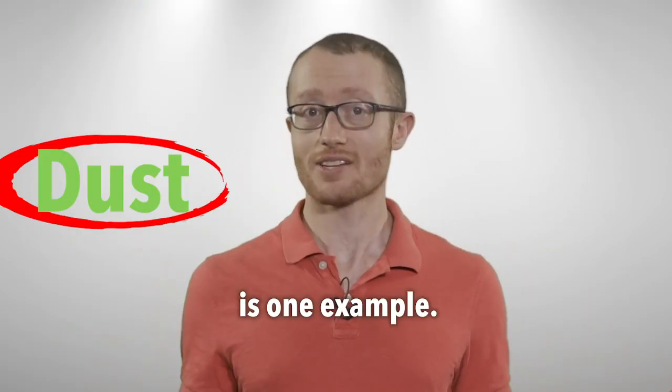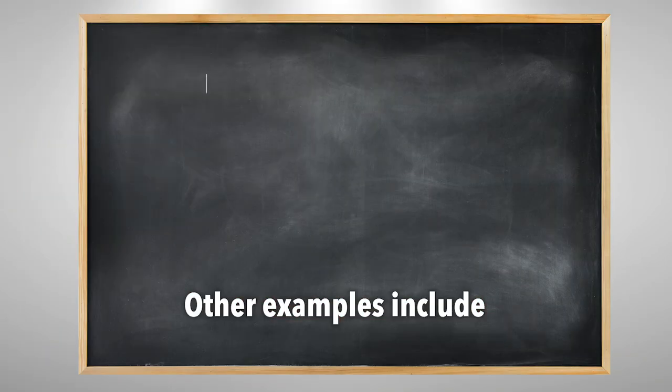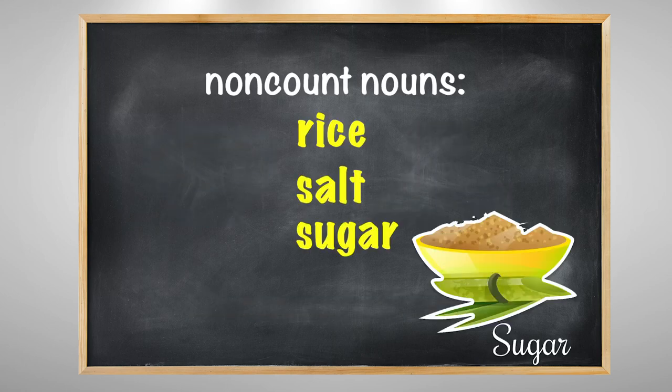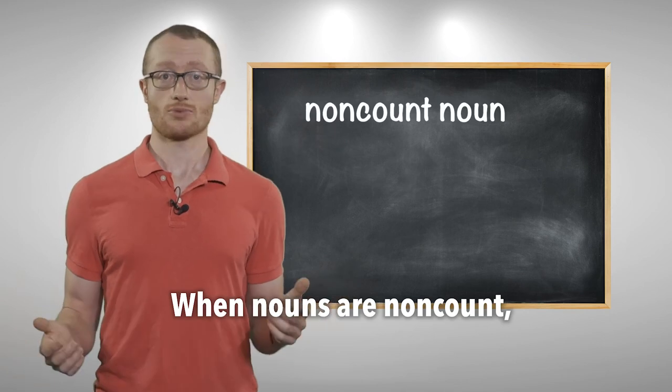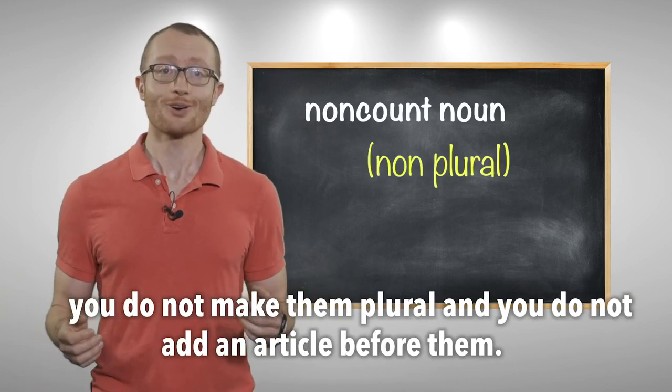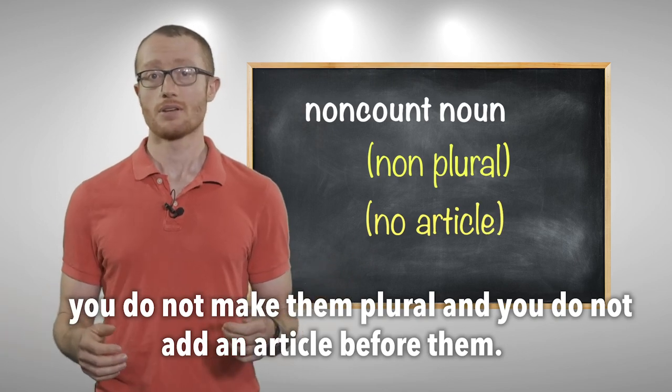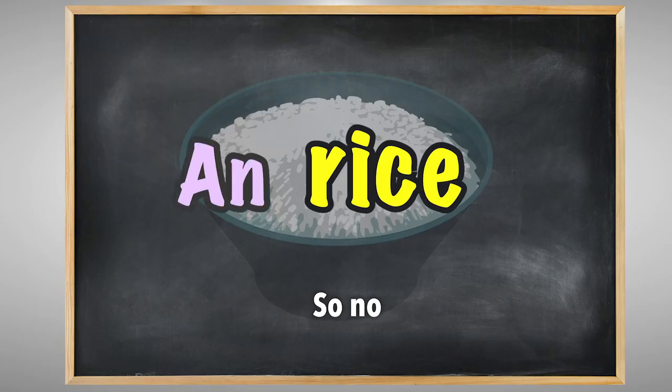Dust is one example. Other examples include rice, salt, and sugar. When nouns are non-count, you do not make them plural and you do not add an article before them. So no a, an, or the.